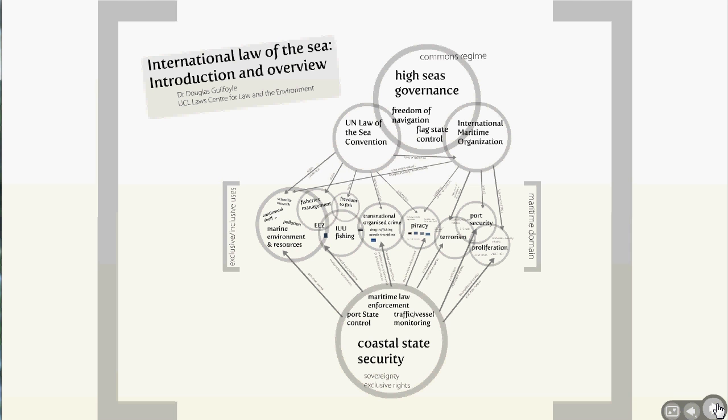We see issues impinging on trade. We also increasingly see issues impinging on security — things like piracy off the coast of Somalia, the threat of maritime terrorism, and in a strange way crossing over between those, illegal fishing as both an environmental issue and a criminal law issue.